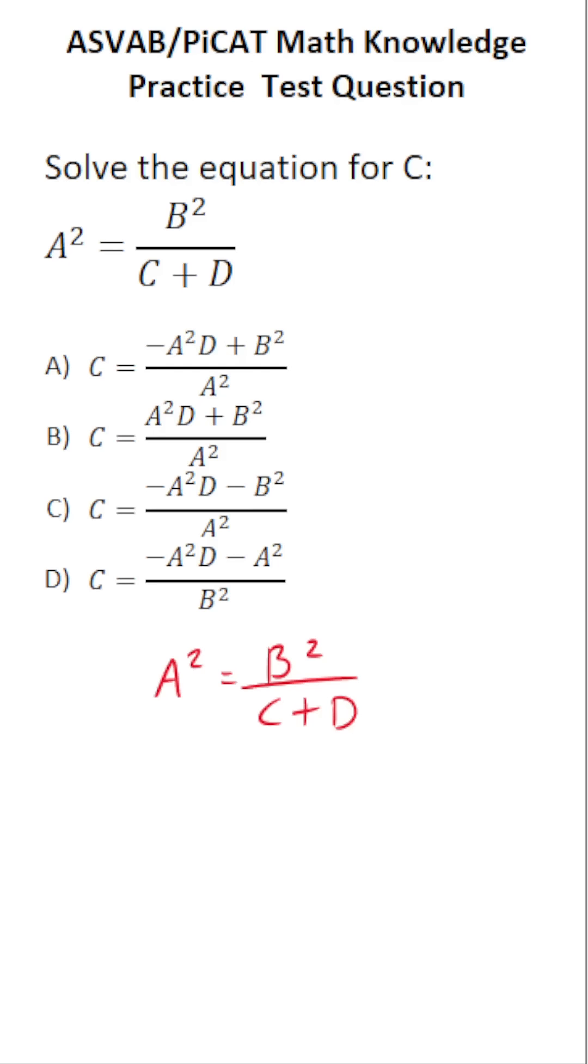The first thing we want to do is get C out of the denominator. And to do that, we're going to multiply both sides of this equation by C plus D. So we're going to multiply that side by C plus D and this side by C plus D. In doing so, these cross out here, leaving you with just B squared on this side.